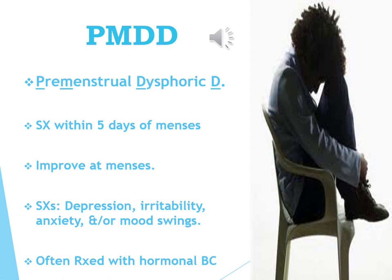PMDD, premenstrual dysphoric disorder, is not an onset specifier but a full category of depressive illness. Unlike what many assume, the depression occurs before menstruation and actually improves when menses arrive. It's often treated with hormonal birth control. Symptoms include depression, irritability, anxiety, and mood swings — all occurring in the premenstrual, not the menstrual, time.